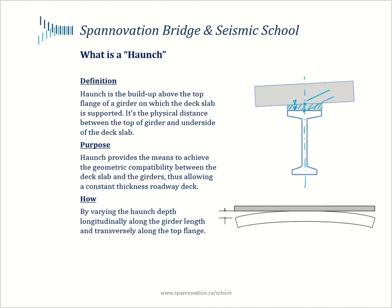The main purpose of a haunch is to provide a means to achieve geometric compatibility between the deck slab and the girders, and this allows us to have a constant thickness roadway deck.